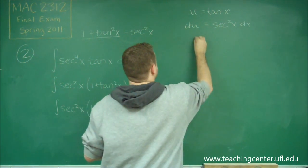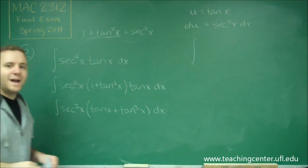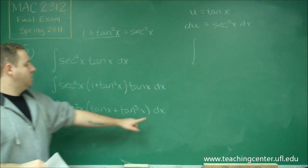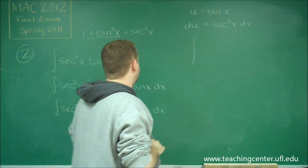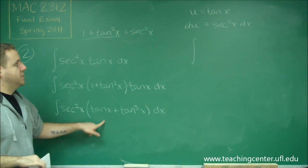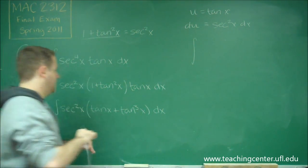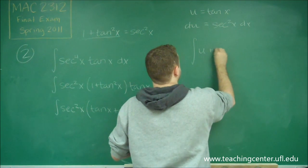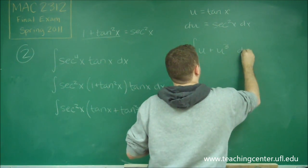And now when we substitute back into our integral, secant squared dx just becomes du, and then everywhere there's a tangent, we're putting u instead. So we get u plus u cubed du.